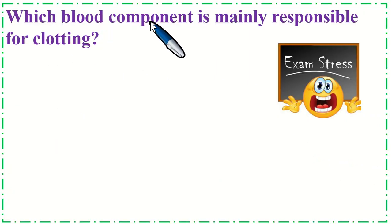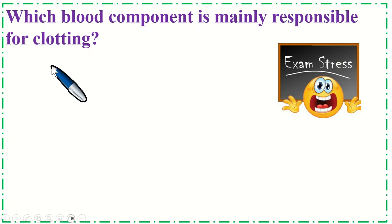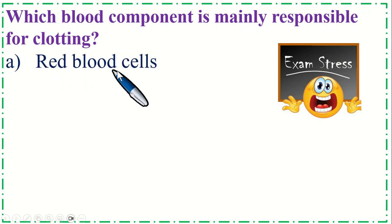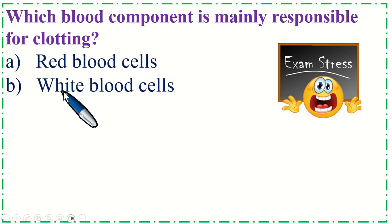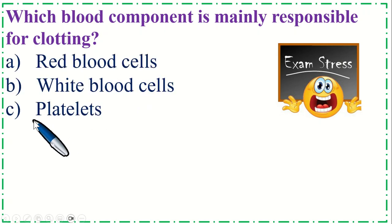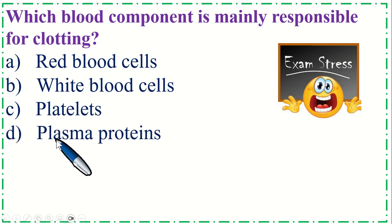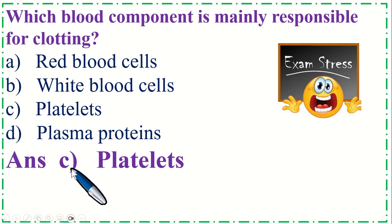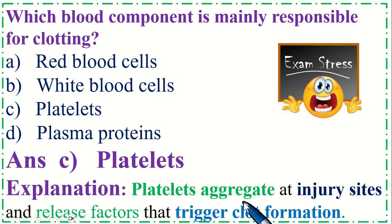Which blood component is mainly responsible for clotting? Option A: Red blood cells, B: White blood cells, C: Platelets, and Option D: Plasma protein. The correct option is C, Platelets. Platelets aggregate at injury sites and release factors that trigger clot formation.